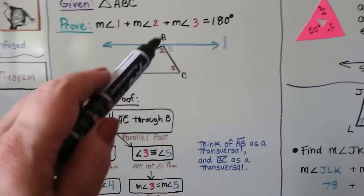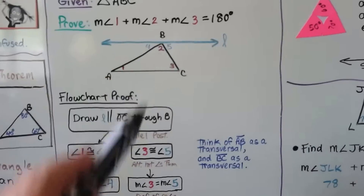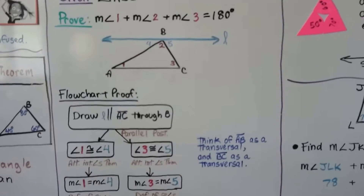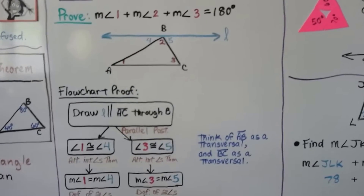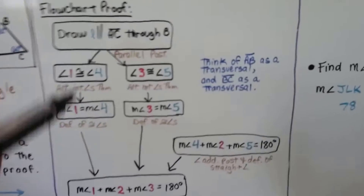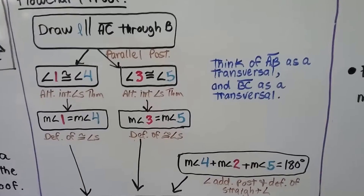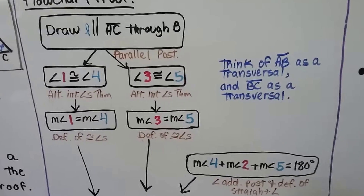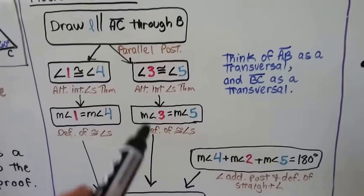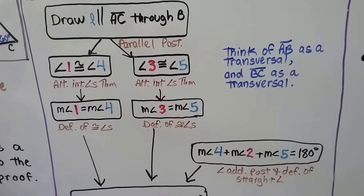If we think of BC as a transversal, we can say angle 3 and angle 5 are congruent because of the Alternate Interior Angles Theorem. And if they're congruent, they're equal — that's the definition of congruent angles. So the measure of angle 1 equals the measure of angle 4, and the measure of angle 3 equals the measure of angle 5.